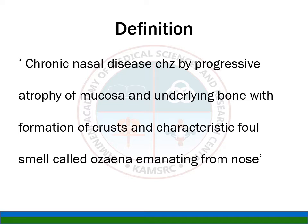This is one of the topics wherein we have a proper definition where we cannot change a single word. It is a chronic nasal disease characterized by progressive atrophy of the mucosa and the underlying bone, with formation of crust and characteristic foul smell called ozena emanating from the nose. Each and every word is important. This is commonly asked in practical examinations as a four-mark or two-mark question.